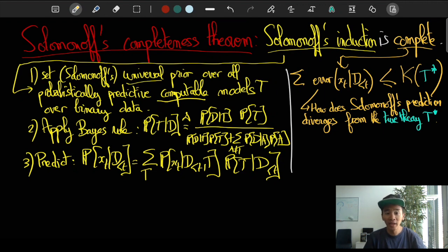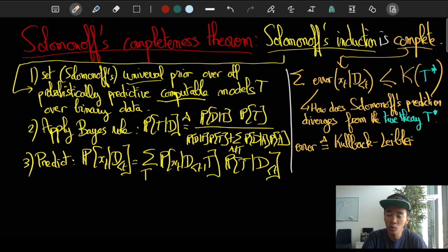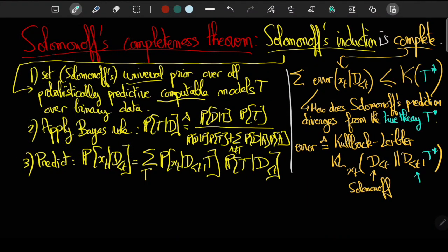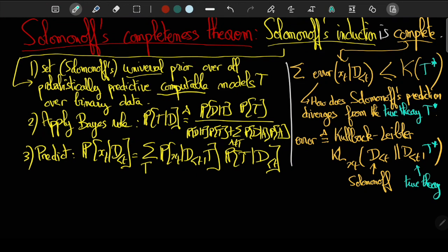Well, we need to measure the distance between these two, and one natural way to do this is through the so-called KL divergence. So the KL divergence is a very usual tool, very basic tool, to make the comparison between the predictions of two different theories: the true theory and the prediction of the Solomonoff demon.